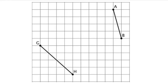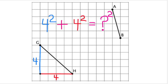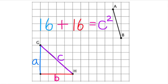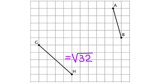We can use the same strategy to find the length of line segment GH. I formed a triangle and used the Pythagorean theorem: a squared plus b squared equals c squared. Since 16 plus 16 equals 32, c squared equals 32, which means the length of line segment GH is the square root of 32.